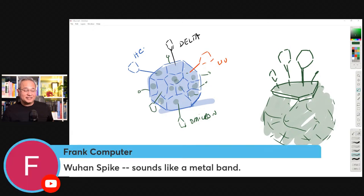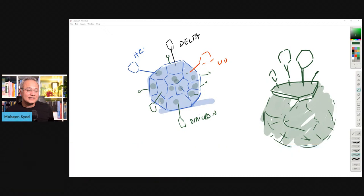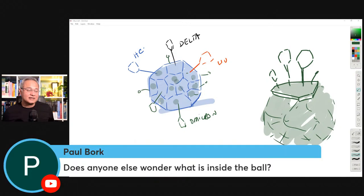Frank Computer says Wuhan spike sounds like a metal band. Paul Bork says does anyone else wonder what is inside the ball? So I'm sure that it is just solid protein structure.